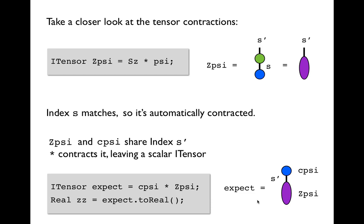Finally, on such a tensor we're allowed to call the method toReal, which returns a real number that's equal to the single component of that scalar or rank zero tensor.